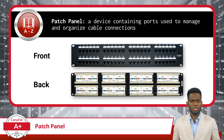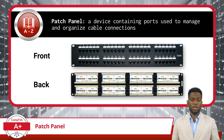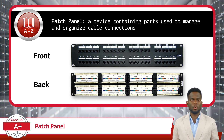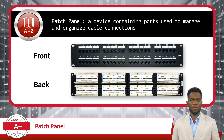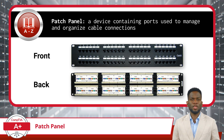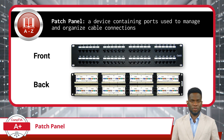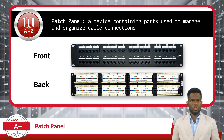A patch panel is a device containing ports used to manage and organize cable connections. It is a central location in a building's network system where all the network cables converge. It's typically a flat panel with numerous ports where network cables are plugged in, providing a convenient and organized way of managing cable connections from different rooms or areas in a building to connect to network devices like switches and routers.